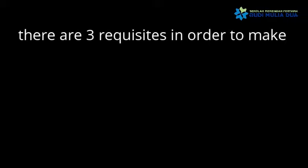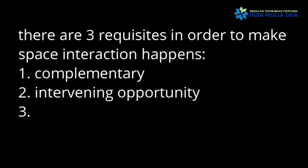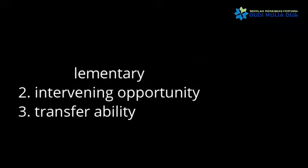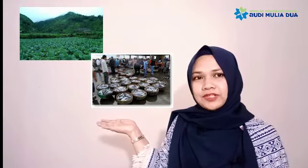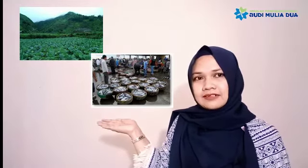There are three requisites in order to make space interact. First, when there are areas with different community richness and they need each other to fulfill needs. For example, Cilacap is a fish producer and Dieng is rich in vegetables. Dieng needs fish and Cilacap needs vegetables. Therefore, there was an interaction in the form of trade between Dieng and Cilacap.